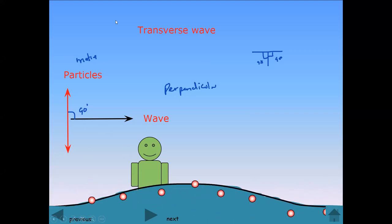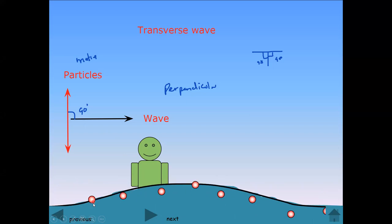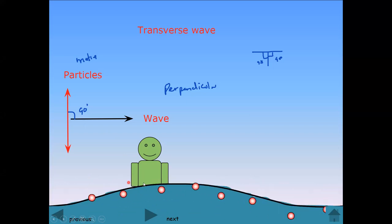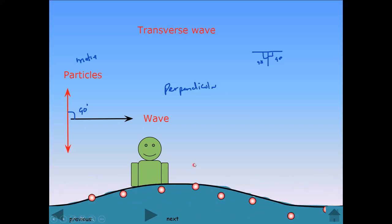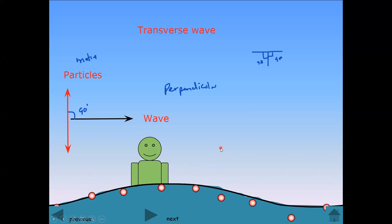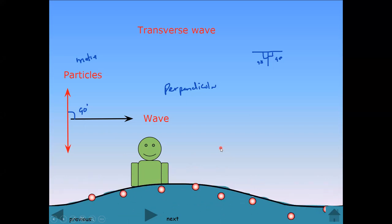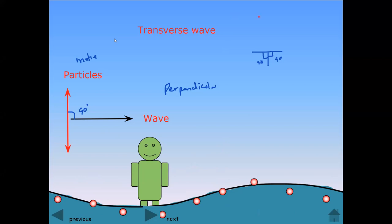As you can see, the particles are moving up and down. When we focus on one particle, that particle is moving up and down while the wave travels either towards the right or left — the energy transfers to the right and left. We call that wave a transverse wave.